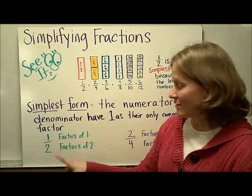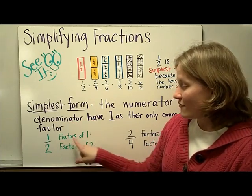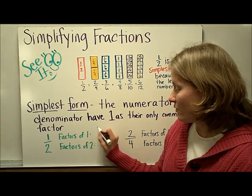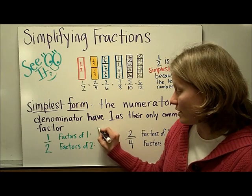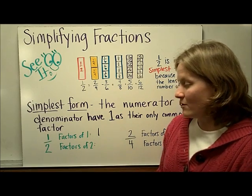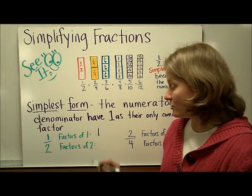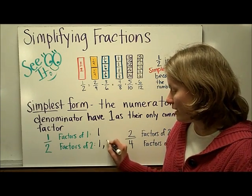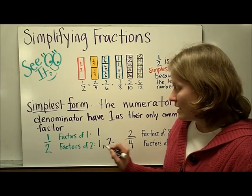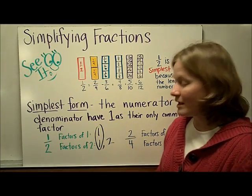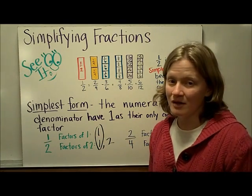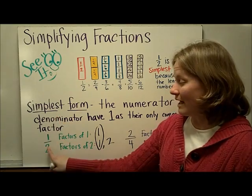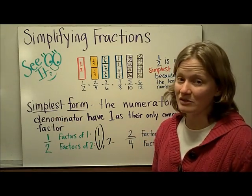Let's explain that. If we think about factors of 1, the only number we can multiply to get 1 is 1. And the only numbers we can multiply to get 2 are 1 and 2. And since 1 is their only common factor, by definition, 1 half is in simplest form.